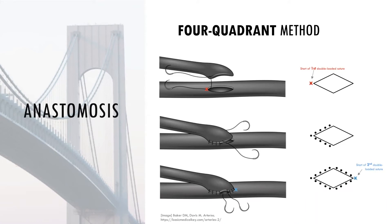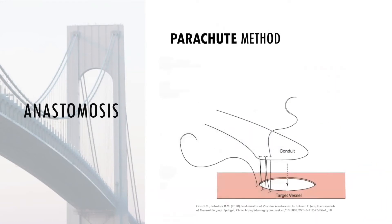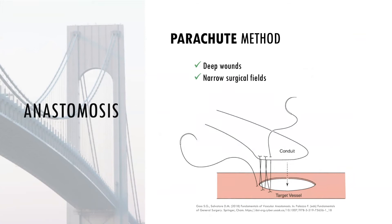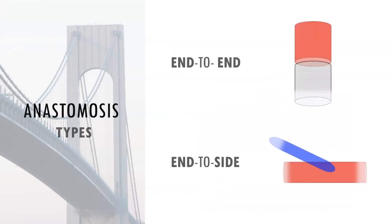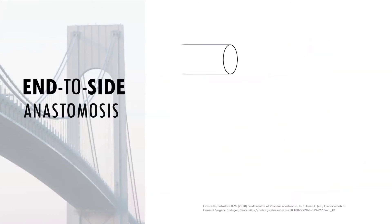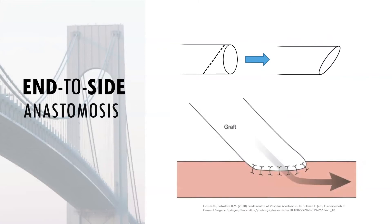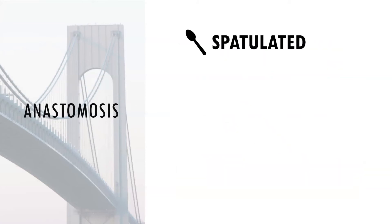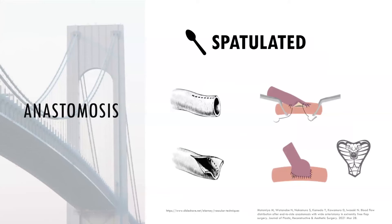A standard running suture is done by suturing each needle halfway around the anastomosis to meet at the other end. The four-quadrant method uses two double-loaded sutures, each started at opposite ends of the anastomosis, with each of the four needles sewn one quarter of the way around. The parachute technique is commonly used and is particularly helpful when access is difficult, such as in a deep wound or narrow surgical field. Several running sutures are placed between the graft and the artery with them separated so the graft hovers over the artery, giving the appearance of a parachute; both ends are then pulled to bring the graft down onto the vessel. Anastomosis can be end-to-end or end-to-side. In an end-to-side anastomosis, the graft end is tapered so the angle between the graft and the vessel is 45 degrees rather than 90 degrees, which reduces flow disturbance. The end of the graft may be spatulated — a short longitudinal incision splaying the edges open — creating a wider anastomosis to reduce the risk of anastomotic narrowing.